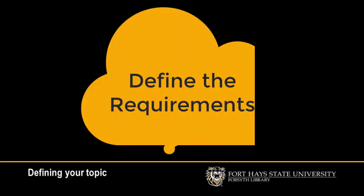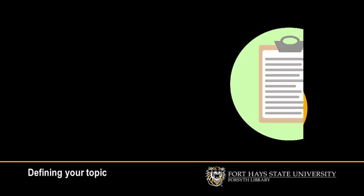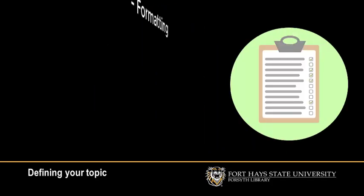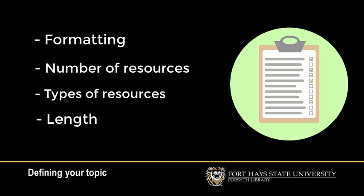The first step in defining your topic is to re-read the assignment and take note of any requirements. For example, is there a specific format that you need to present the information in? Do you have a required number of resources? Are there specific types of resources that you have to use? Is there a page limit or length of presentation requirement? Knowing the requirements will help you make better decisions later on in the research process.